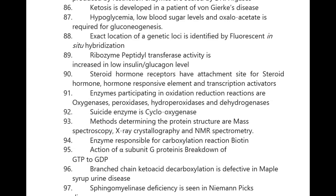Ketosis is developed in a patient of von Gierke's disease. Hypoglycemia (low blood sugar levels) and oxaloacetate is required for gluconeogenesis to start. Exact location of a genetic locus is identified by FISH — fluorescent in-situ hybridization. Enzyme peptidyl transferase activity is increased in low insulin or glucagon levels. Steroid hormone receptors have attachment sites for steroid hormone, hormone-responsive element, and transcription activators.